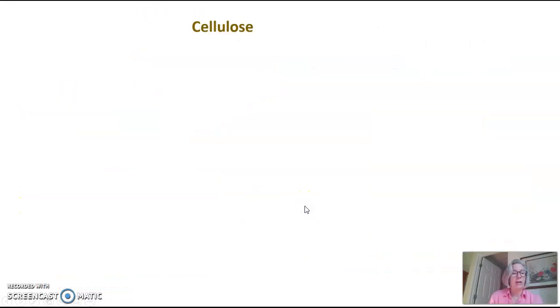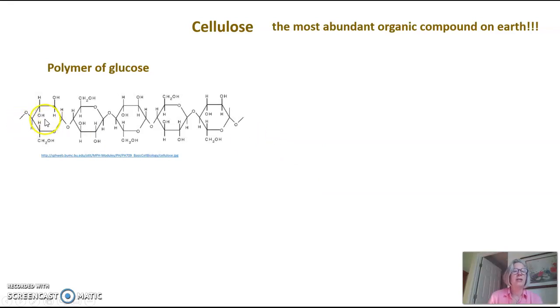The last polysaccharide we'll talk about is cellulose. Fun fact, cellulose is the most abundant organic compound on earth. It is, of course, a polymer of glucose as are all of the polysaccharides we're talking about tonight. So again, you can see the glucose, glucose, glucose, glucose here in my polysaccharide.